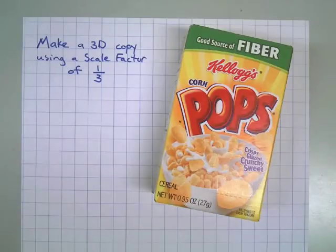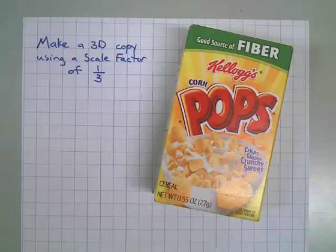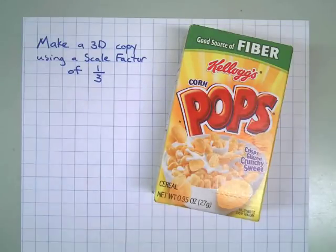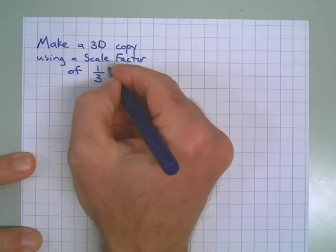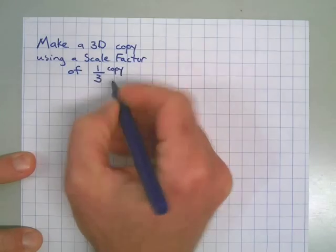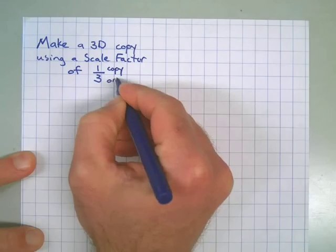Today's video is all about making a three-dimensional copy using scale factor to make your calculations. Right now I have a miniature box of Kellogg's Corn Pops and I'm going to make a three-dimensional copy of it using a scale factor of one-third. If you remember, a scale factor less than one on the top means that my copy is going to be smaller than the original.